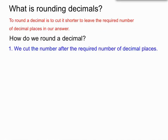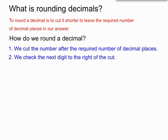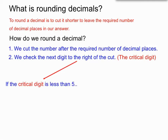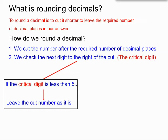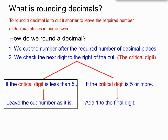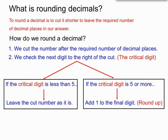How do we round a decimal? We cut the number after the required number of decimal places, then we check the next digit to the right of where we've cut — we call that the critical digit. If the critical digit is less than five, we leave the cut number just as it is. If the critical digit is five or more, we add one to what will be our final digit. A quick way to remember: five or more, raise the score.